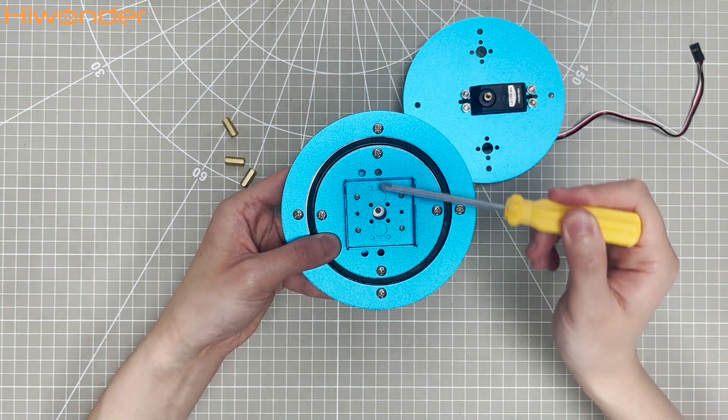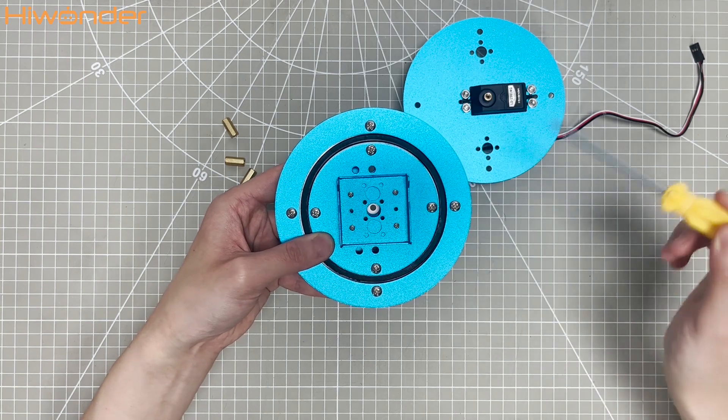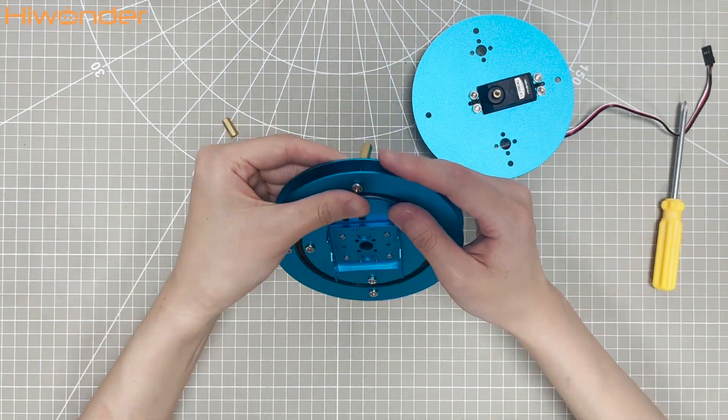Ensure all screws are in the cross pattern, then tighten them with dual pass copper columns.